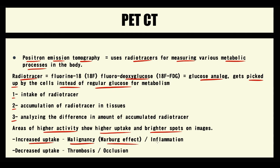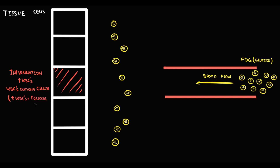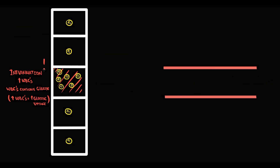The next condition that can cause increased glucose uptake is inflammation. When inflammation develops, white blood cells enter the tissue, and white blood cells naturally consume a lot of glucose. The higher the amount of white blood cells in the tissue, the higher the glucose uptake by the inflamed tissue. So inflamed tissue may consume 6 glucose molecules while other tissues consume just 1, causing an abnormal distribution of glucose detectable on PET-CT.